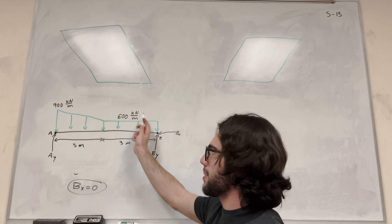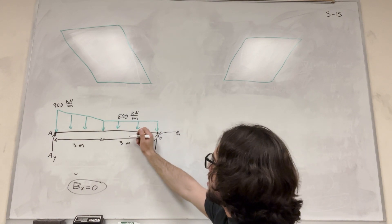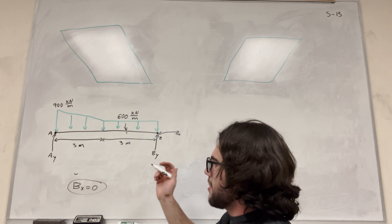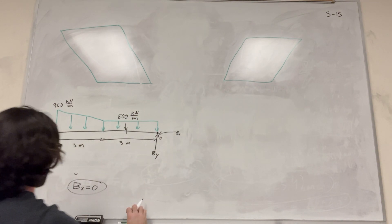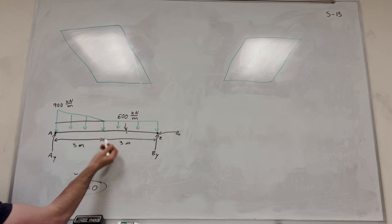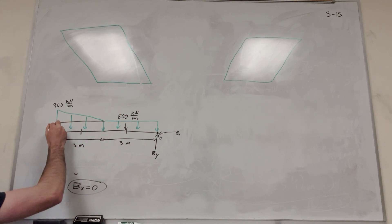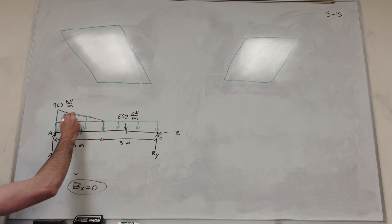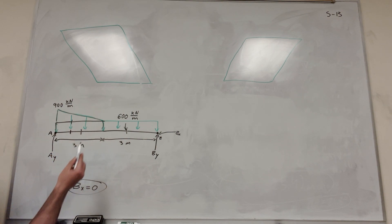So this 600 distributed load, this one's going to be pretty easy to find where it acts because it's just flat. We know it acts right at the center here, so this is going to be 1.5 meters in. And then let's break up this triangle. We have this rectangle and a triangle. So if we break this up, then we have this distributed load which is 600 kilonewton per meter, and then we have this triangle distributed load. This first one is going to act halfway in between. But then this next one, we just have this triangle here. A triangle's center of mass is always a third of the way down from the top. So if we go a third of the way down from the top, that means we're going one meter over. So this one's going to act at one meter.